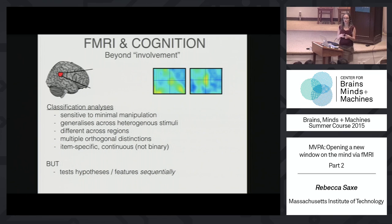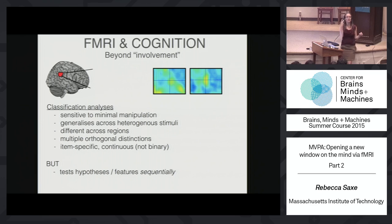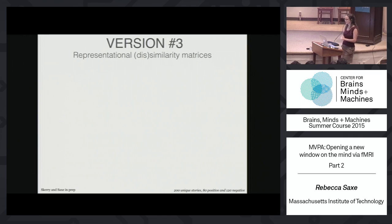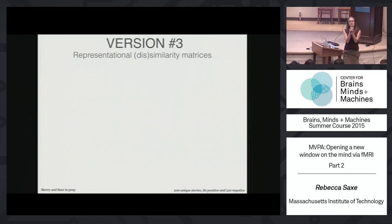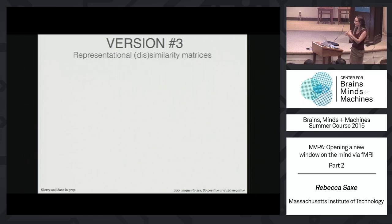Representational dissimilarity matrices take a different approach. Instead of trying to think of one hypothesis and test it — like does the right TPJ represent the difference between Grace poisoning someone knowingly versus unknowingly — RDMs propose a hypothesis space and test the space as a whole. That gives you different sensitivity, different strengths and weaknesses. I'll work through an example where we did this.